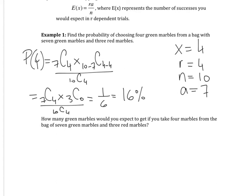Part B asks how many green marbles would you expect to get if you take four marbles from the bag of seven green marbles and three red marbles. So we're looking for our expected value. And that is R, which is four, times A, seven, over N, which is 10. And that gives you 2.8.